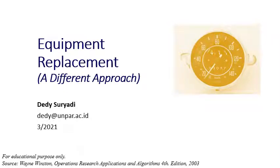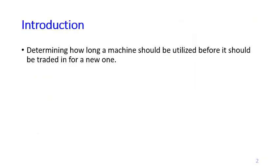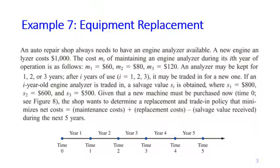Sometimes we have more than one way to formulate the recursion function in dynamic programming. We are going to look at the equipment replacement problem again but with a different approach. In the equipment replacement problem, we need to determine how long a machine should be utilized before we trade it for a new one. You may pause the video if you would like to read the problem carefully.